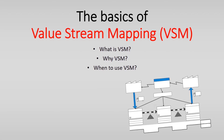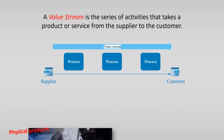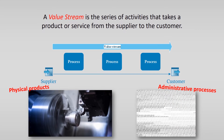In another video we will go through a value stream map in more detail and discuss the symbols that are used and the steps to create this value stream map. To know what a value stream map is, you first need to know what a value stream is. A value stream is the series of activities that takes a product or service from the supplier to the customer. This both applies to physical products and administrative processes. A value stream map is a tool, and with this tool you can visualize this stream of activities.